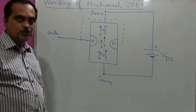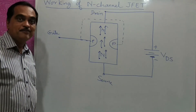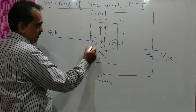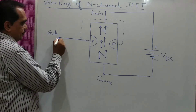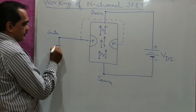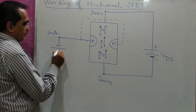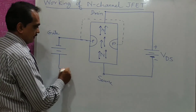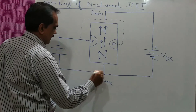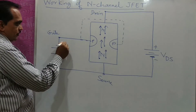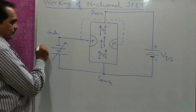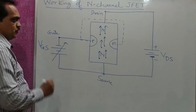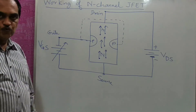Now I want to give a reverse bias voltage to the gate. Reverse bias for the P-type semiconductor means I will connect a negative supply, and this should be variable because I want to vary it. This is your VGS — the voltage between gate and source.